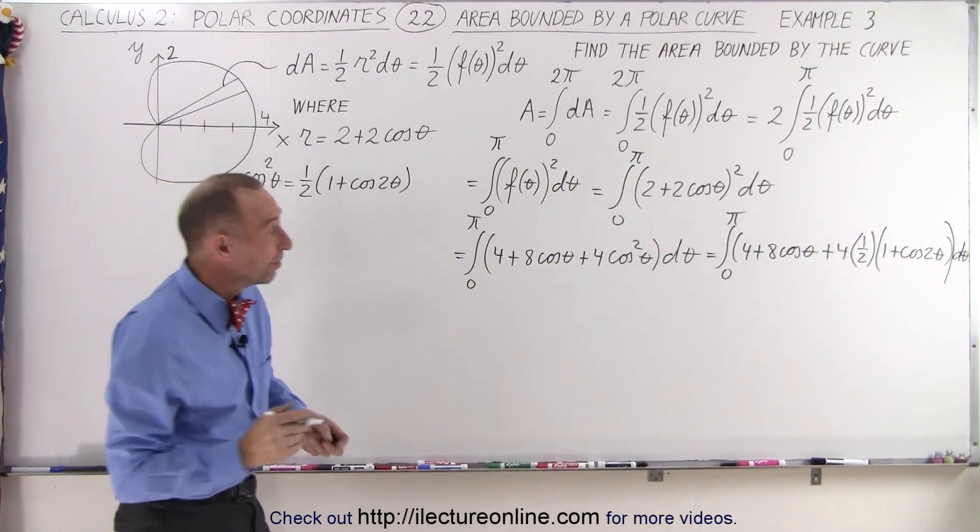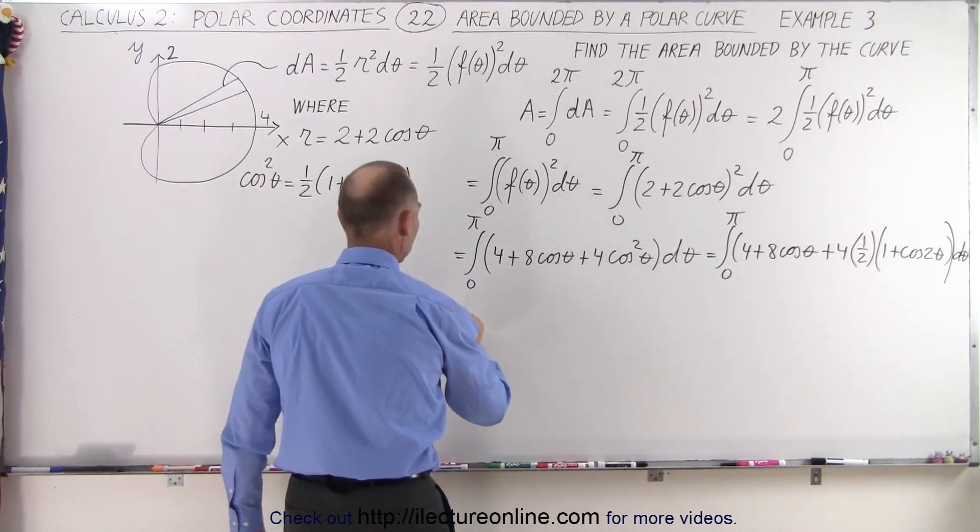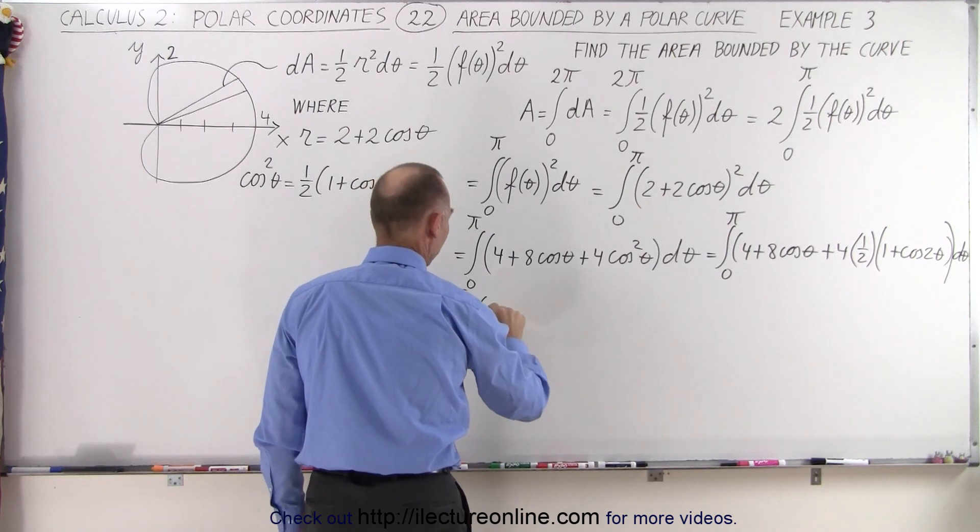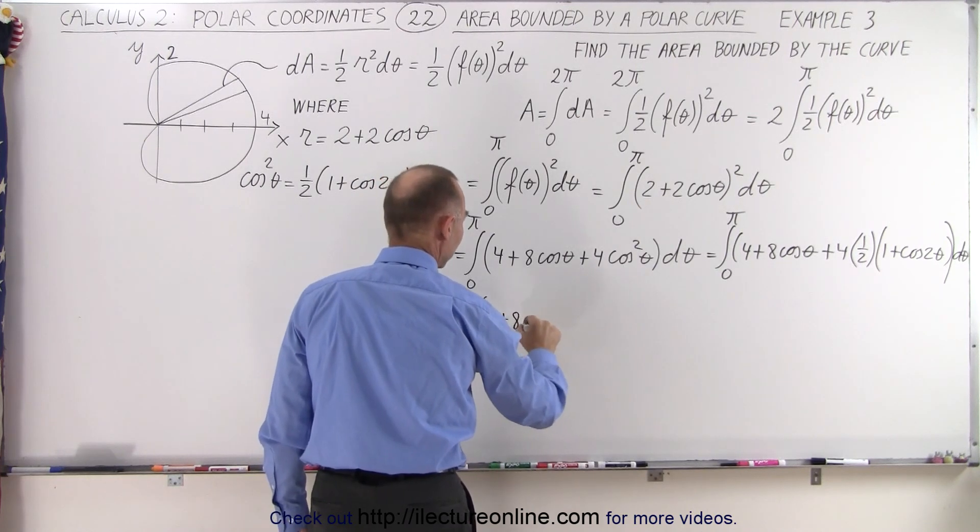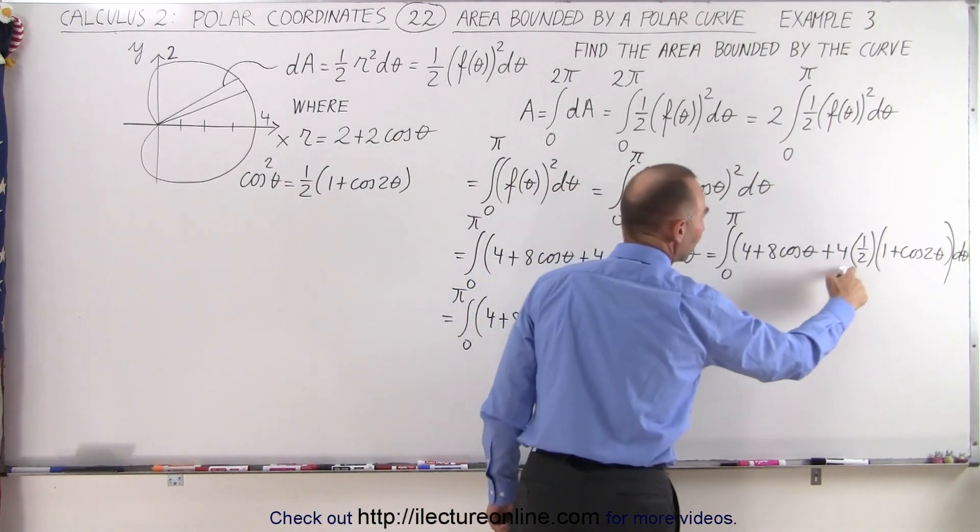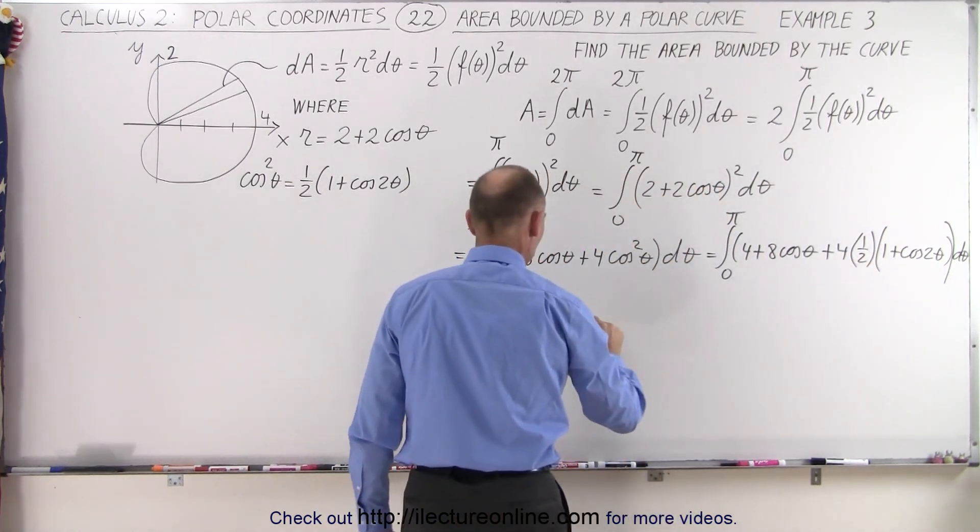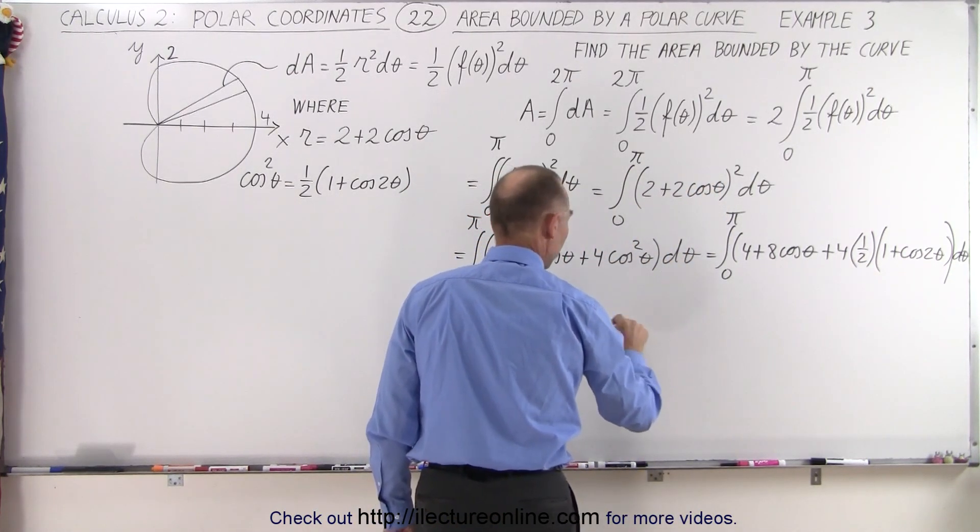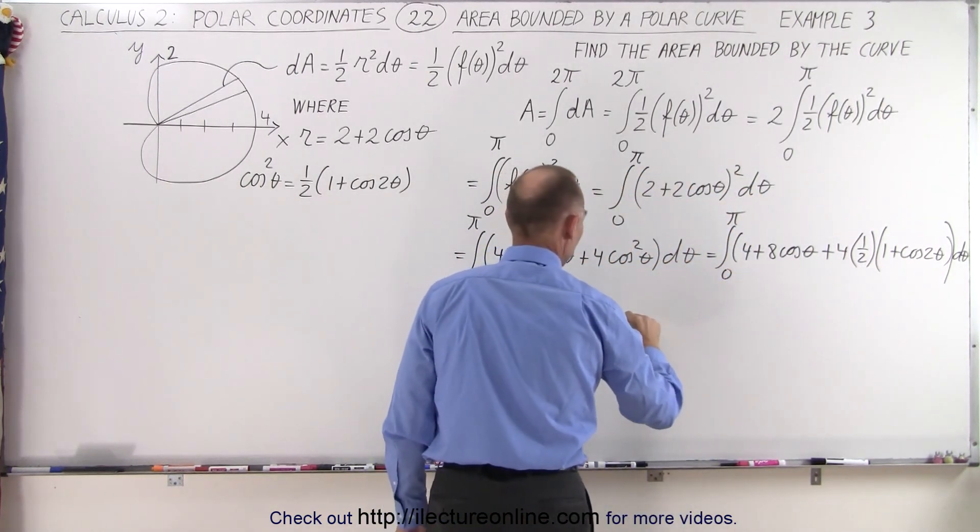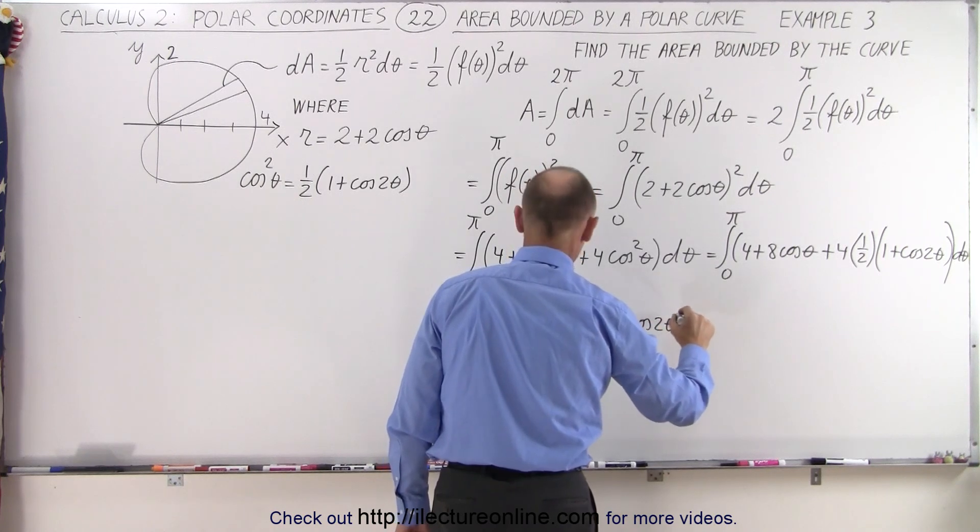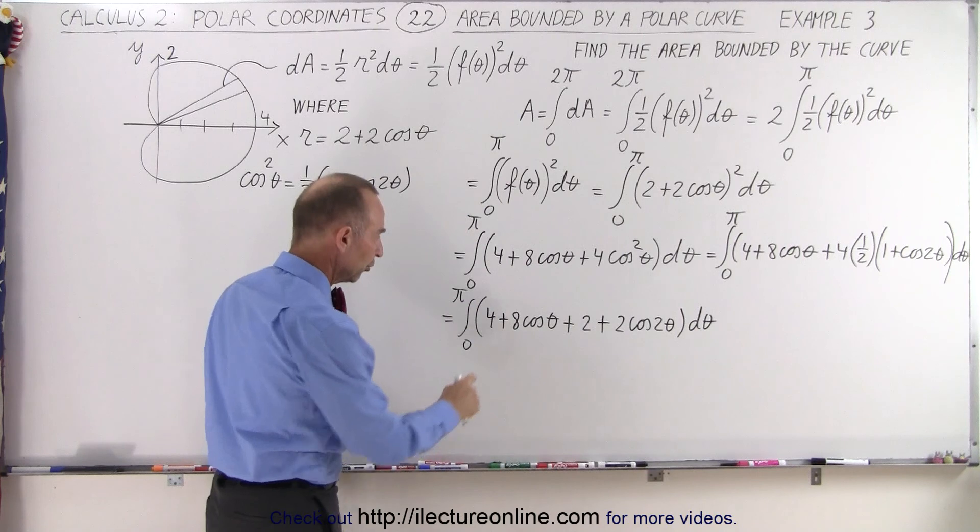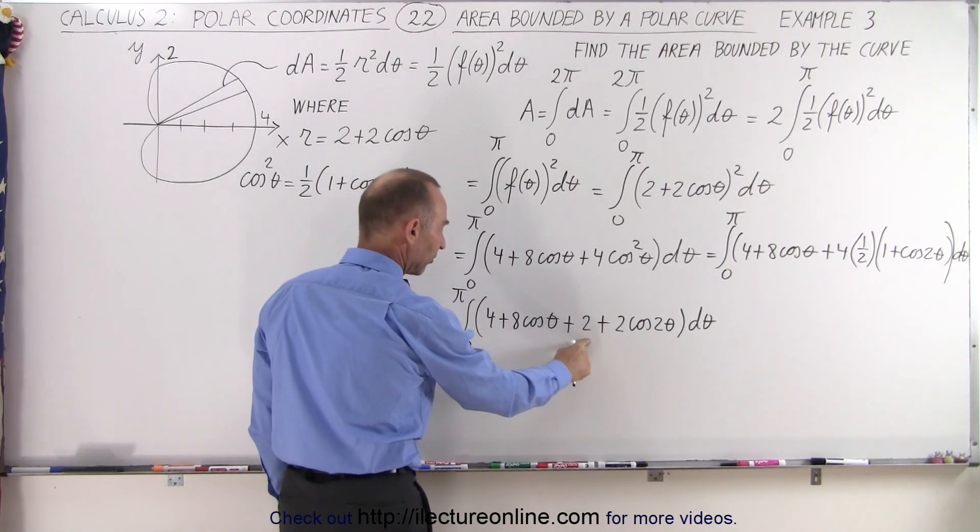Now we can go ahead and simplify that a little bit more. So this is equal to the integral from 0 to pi of 4 plus 8 times the cosine of theta plus 4 times 1 half, which is 2 times 1, which is 2. So plus 2 plus 2 times the cosine of 2 theta. And then notice we can combine the 4 and the 2. That becomes 6.